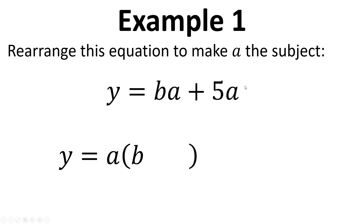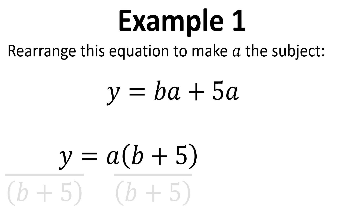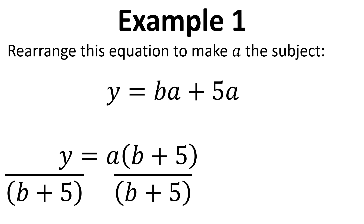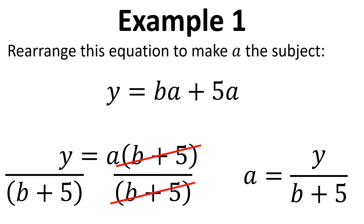The first thing we're going to put in is B, so if we multiplied A by B we'd get the BA term back. The next thing we're going to put in is plus 5, so if we multiply A by plus 5 we get the plus 5A. Now we've factorised, we're going to divide both sides by what's in those brackets — B plus 5 — so that cancels on the right hand side and we're left with A equals Y divided by B plus 5.